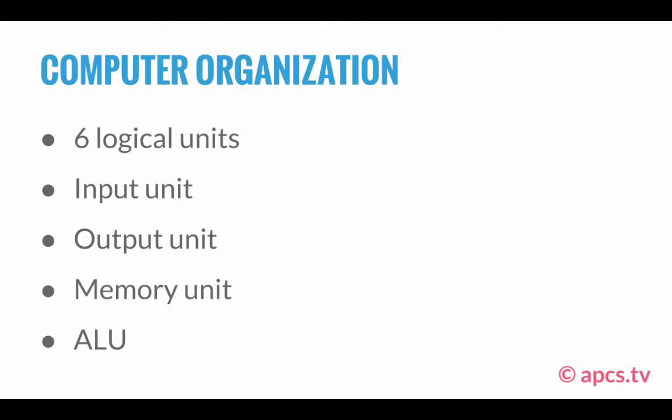There are six logical units that make up the organization of the computer. The first unit is the input unit, which receives information from input devices, such as the keyboard or a mouse, and it then stores that information so that other units can interpret it. This information can come through the internet, USB drives, speaking to your computers, and many other means.